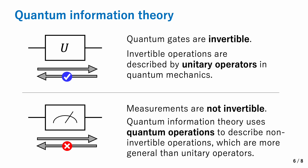In contrast, the measurement of a qubit is not invertible, since it destroys the quantum superposition. Once the box is opened, Schrödinger's cat is either alive or dead, not in a superposition of these two choices. Therefore, it is a non-invertible operation, and in quantum information theory a mathematical concept known as a quantum operation is used to describe such non-invertible operations.